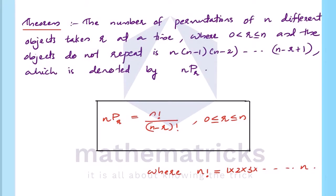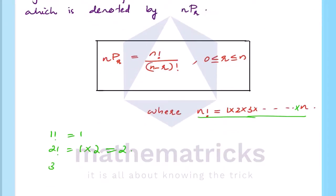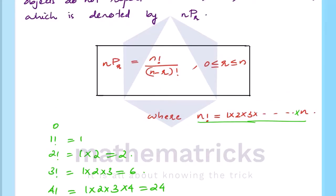Next, n factorial is 1 × 2 × 3 × … × n. One factorial equals 1. Two factorial equals 2. Three factorial equals 1 × 2 × 3 = 6. Four factorial equals 1 × 2 × 3 × 4 = 24. An important special case: 0 factorial is equal to 1.